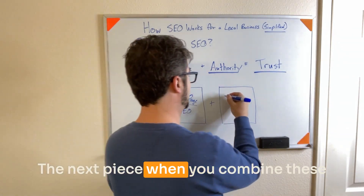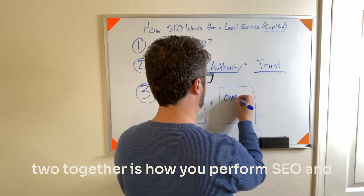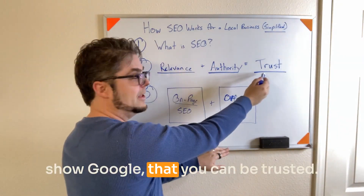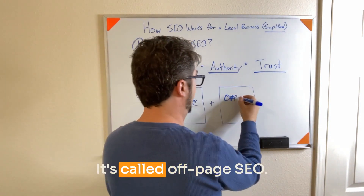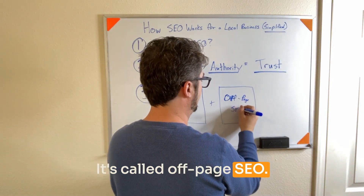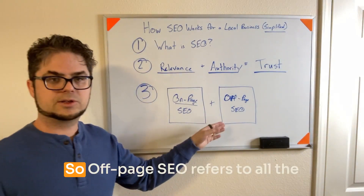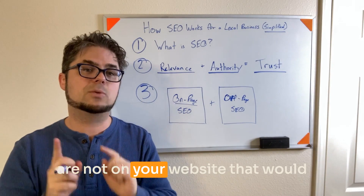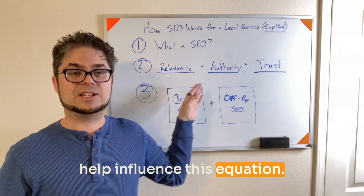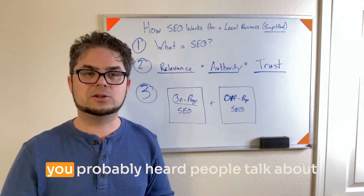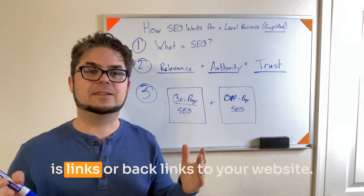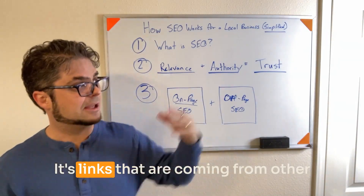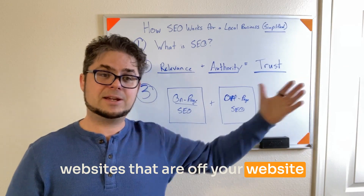The next piece, when you combine these two together, is how you perform SEO and show Google that you can be trusted. It's called off-page SEO. Off-page SEO refers to all the activities that can be taken that are not on your website that would help influence this equation. One of the most common things you've probably heard people talk about is links or backlinks to your website. That's a big part of off-page SEO — links coming from other websites to yours.